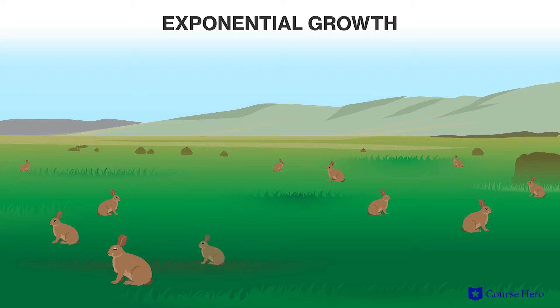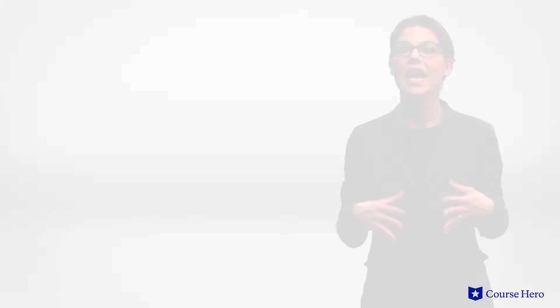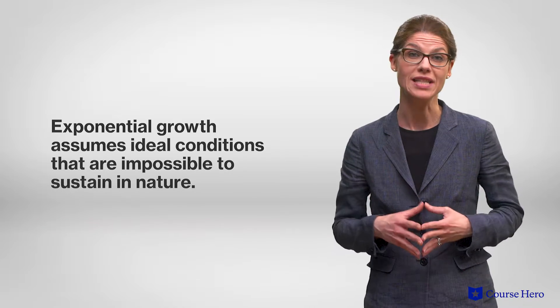Exponential growth of a population is the rate of population growth in situations where food and resources are unlimited. Exponential growth assumes ideal conditions, which are impossible in nature. Conditions might be ideal for a period of time, but they will not be ideal indefinitely.